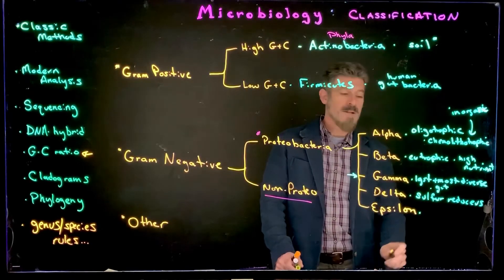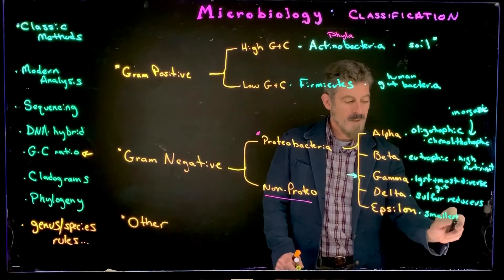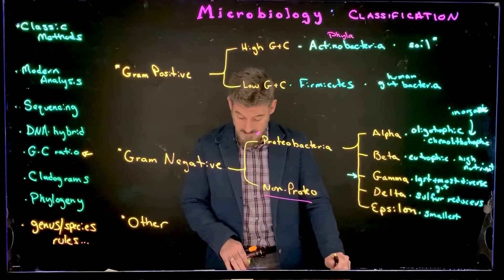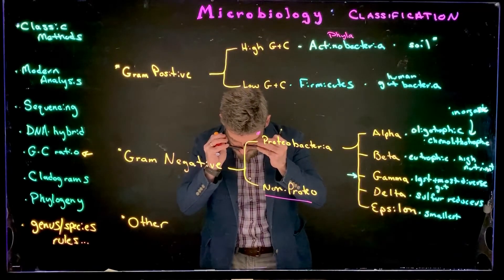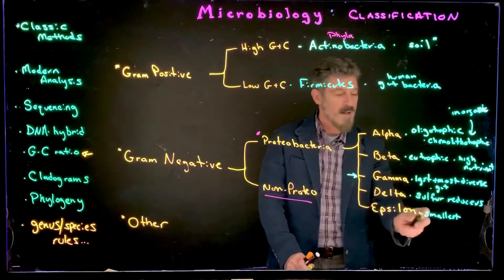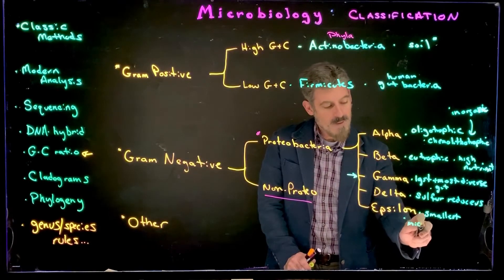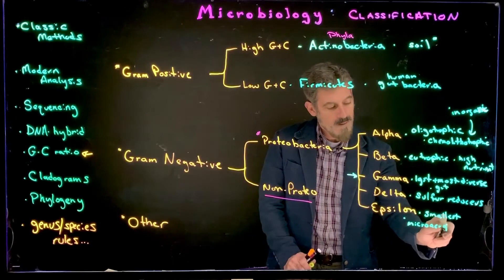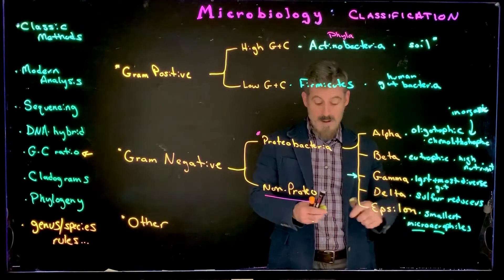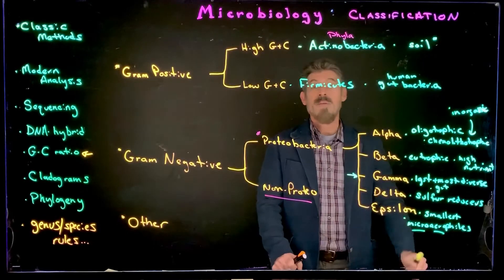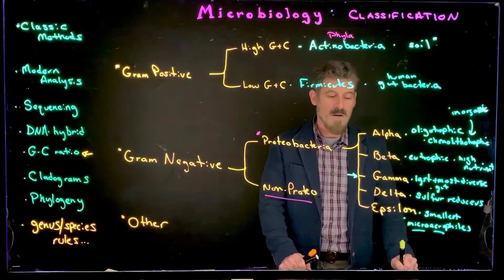The epsilon-proteobacteria is the smallest group with the least number of members. Many of them tend to be microaerophiles — meaning they're aerobic and need oxygen, but at reduced levels. Again, that's not every single member, but microaerophiles are common in this group.